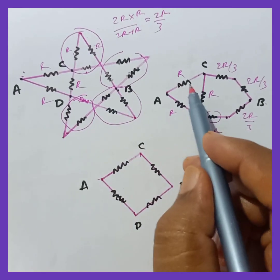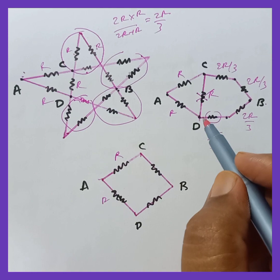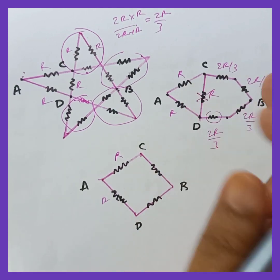So this is also one resistance. Then after that this is R and this is R. The middle one will become a balanced division. So no current passes through across C. We can remove this one.